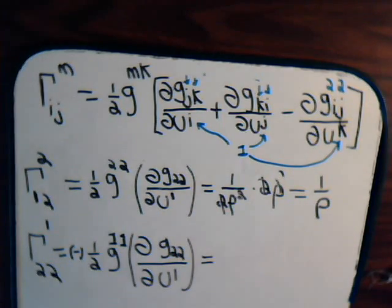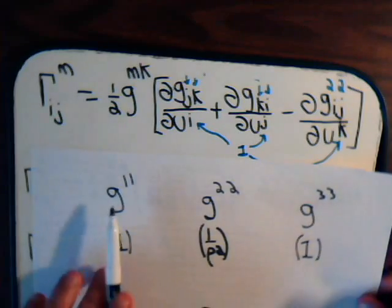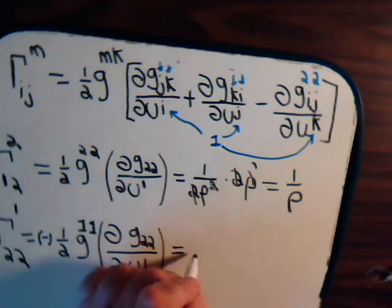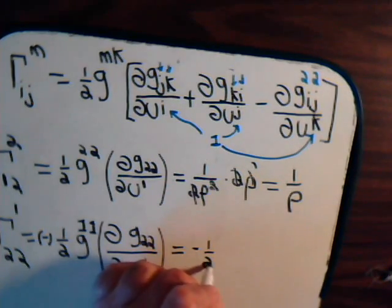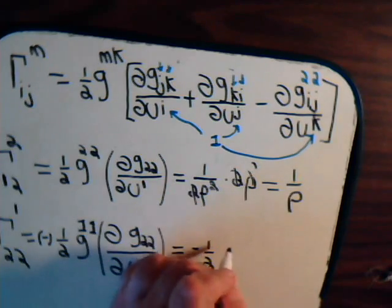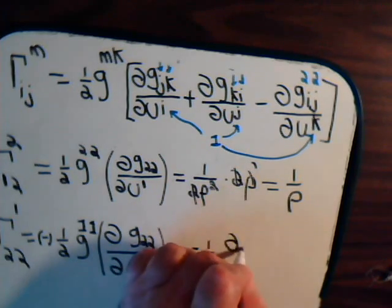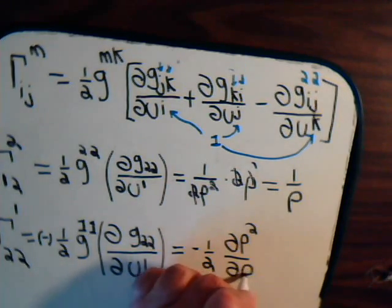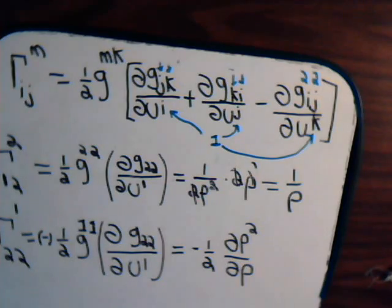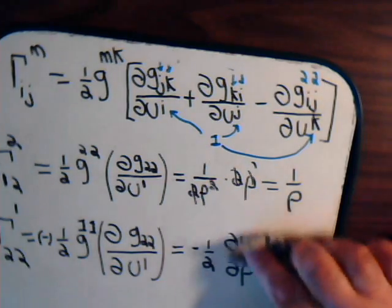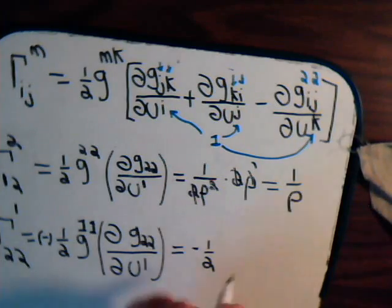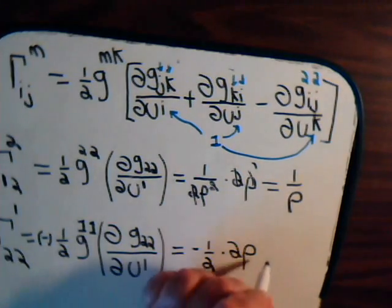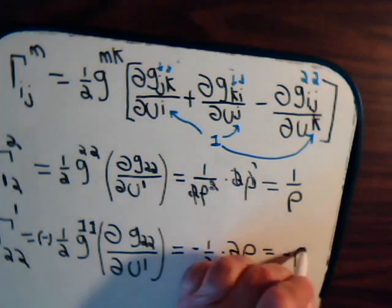k is 1, and we know from before, g11 is just 1. So, this equals minus 1 half, and once again, we have the partial of rho squared with respect to rho. And that equals 2 times rho, that partial derivative. So, we have this times 2 rho equals minus rho.